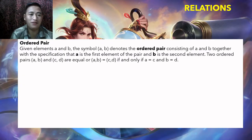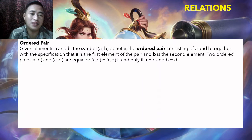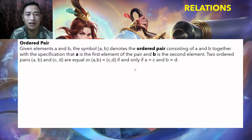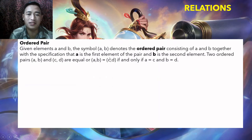Let's start with the definition of the ordered pair. Given elements A and B, the symbol (A, B) in close parentheses denotes the ordered pair consisting of A and B, together with the specification that A is the first element of the pair and B is the second element.